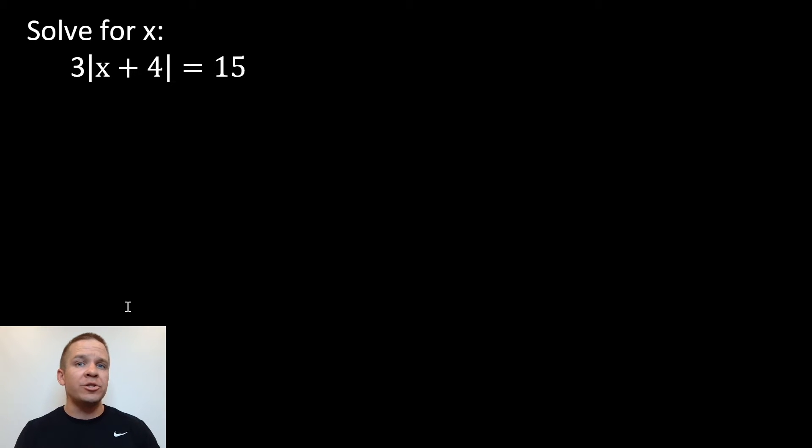All right. Now, for absolute value equations, we need to first isolate the absolute value part before we split it into two separate equations. So what I'm going to do first here is I'm going to divide by three on both sides. And when I do that, I'm going to get the absolute value of x plus four is equal to five.